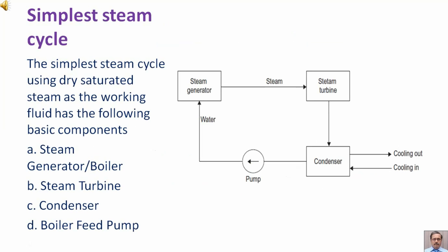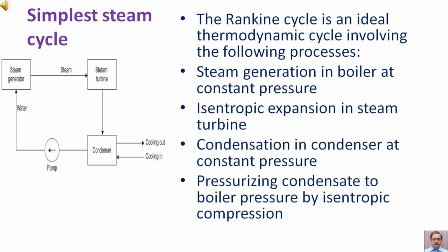The simplest steam cycle using dry saturated steam as the working fluid has the following basic components: steam generator (or boiler), steam turbine, condenser, and boiler feed pump. The Rankine cycle is an ideal thermodynamic cycle involving these components.